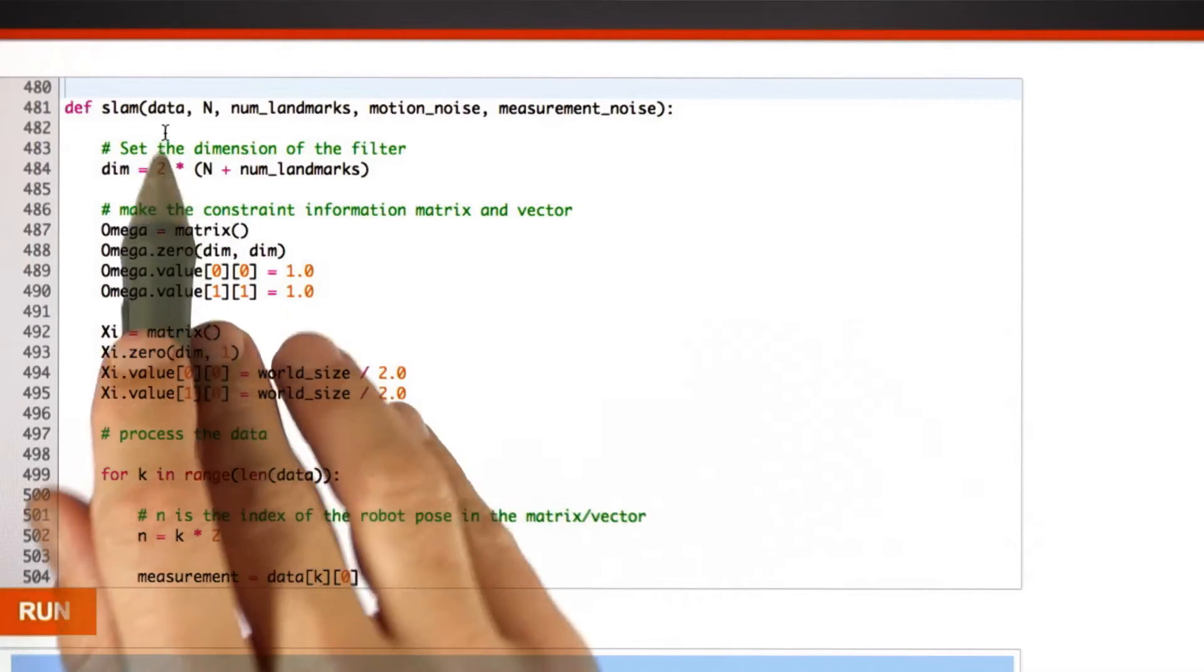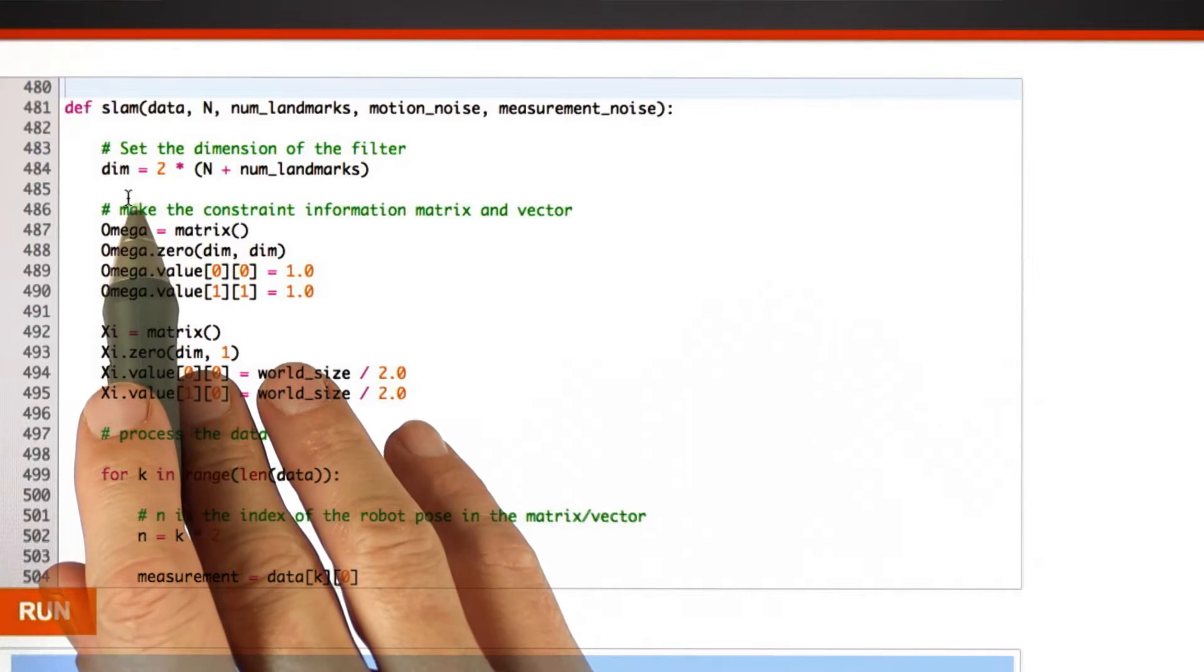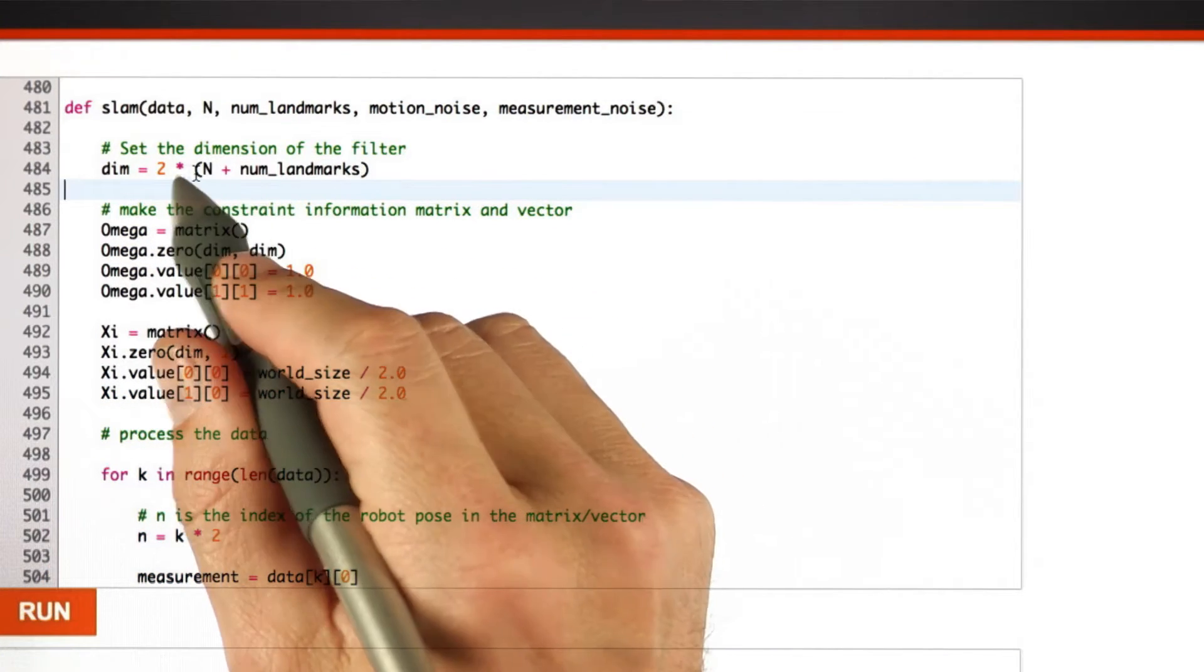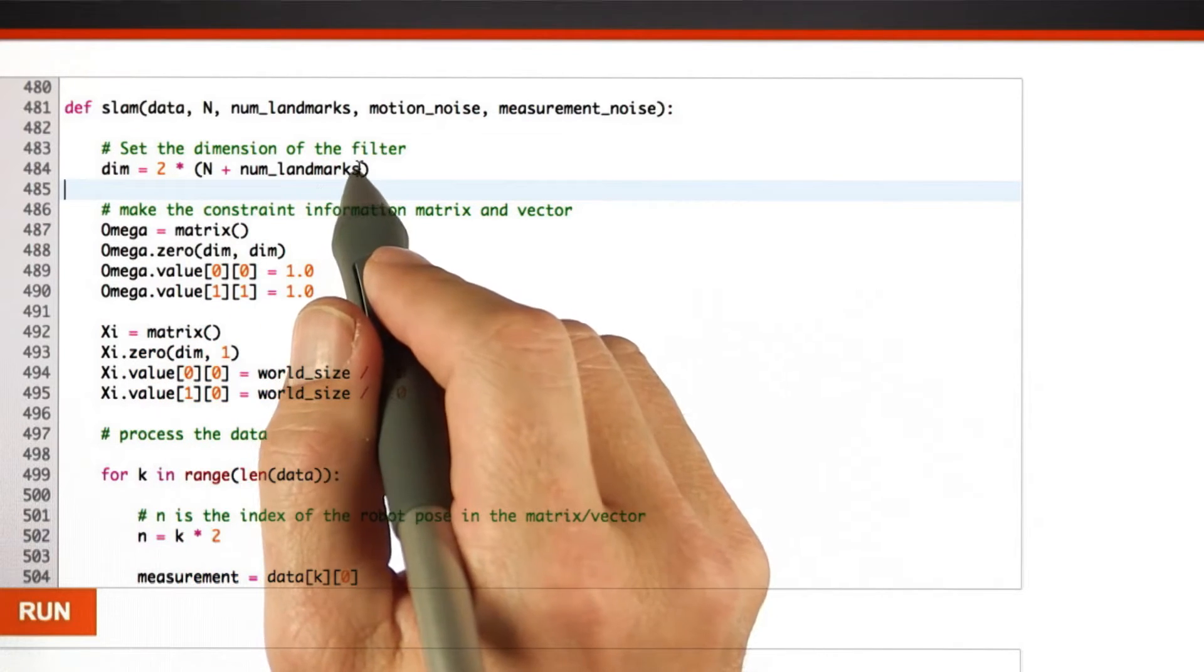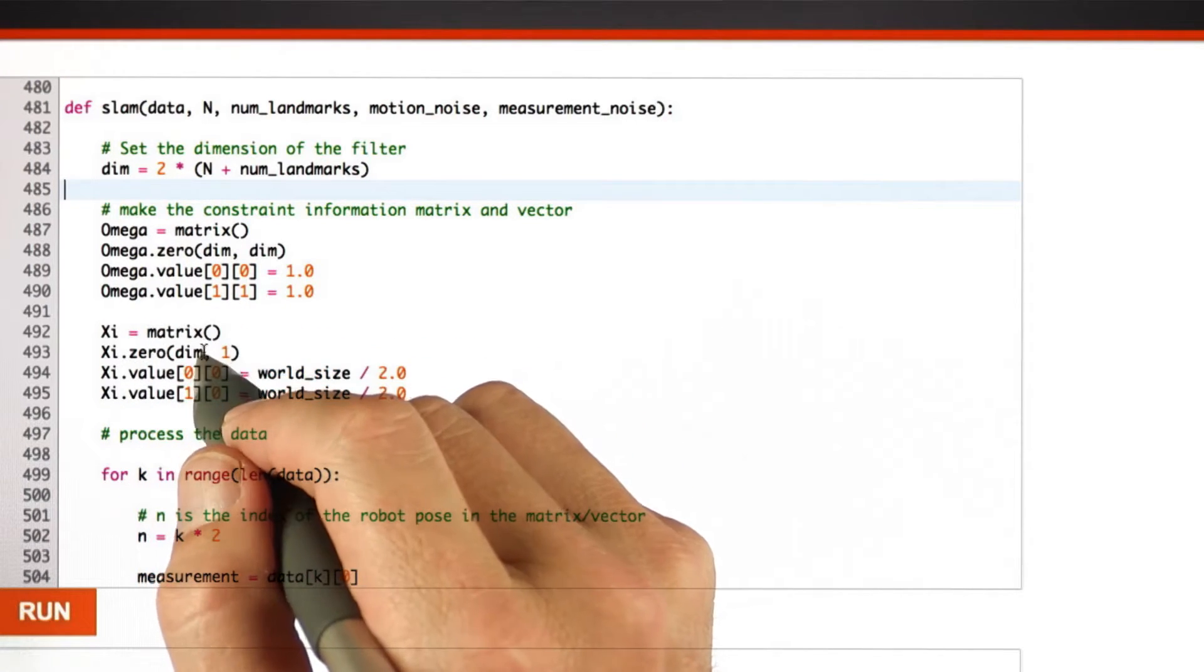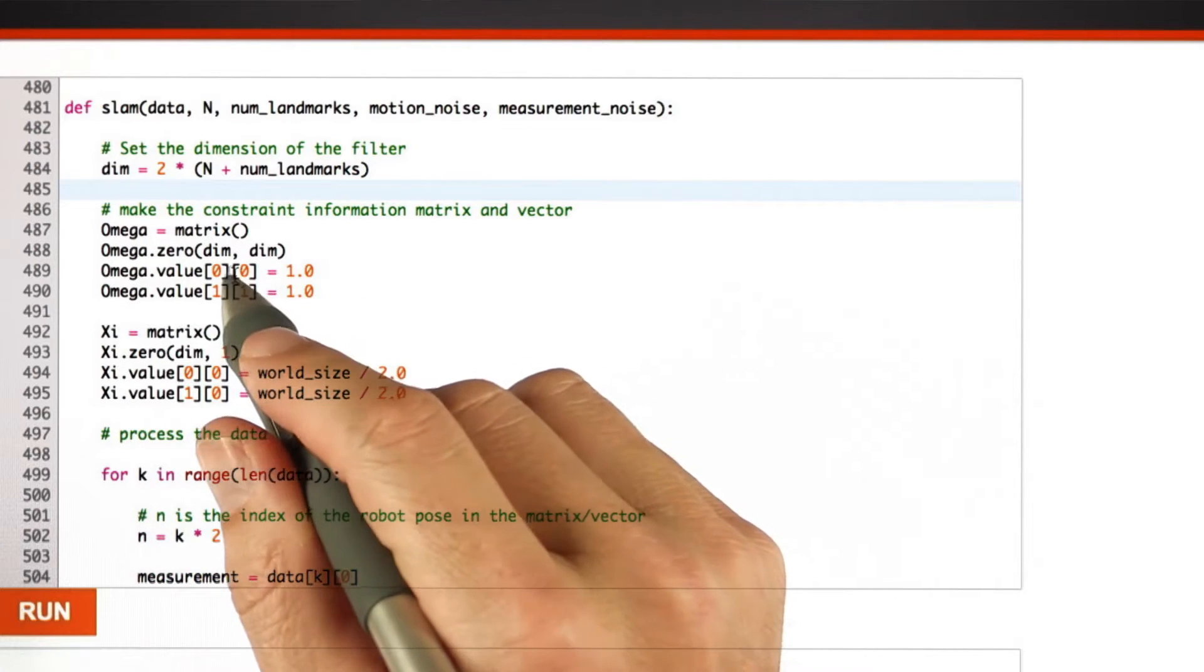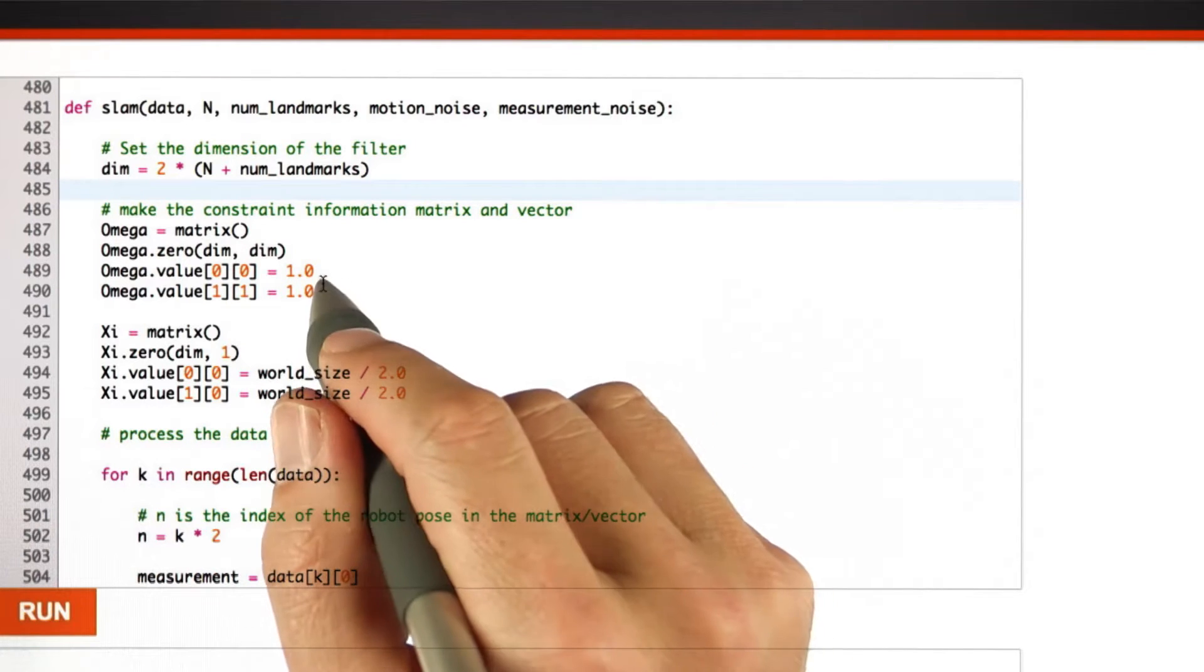So here's my solution. I take out all the input parameters. And the very first thing is I set the dimension of the matrix and the vector. The length of the path plus the number of landmarks times 2, because I'm modeling x and y for each of those in the same data structures. I then create a matrix for omega and a vector for xi, give it the appropriate dimensions. And subsequently, I introduce the constraint that the initial positions have to be world size over 2 with a strength value of 1.